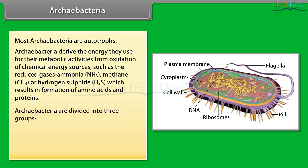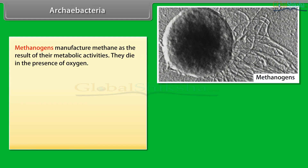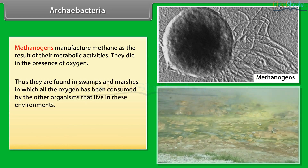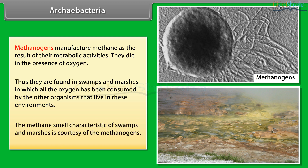Archaebacteria are divided into three groups: Methanogens, Thermoacidophiles, and Halophiles. Methanogens manufacture methane as a result of their metabolic activities. They die in the presence of oxygen and are thus found in swamps and marshes where all oxygen has been consumed by other organisms. The methane smell characteristic of swamps and marshes is courtesy of the methanogens.